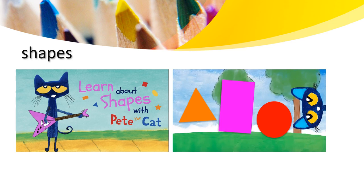Do you see a triangle? Do you see a circle? I want you to look around you and find a circle. Yes, it might be a clock — that is a circle. There is also a rectangle. Do you see a rectangle around you? Yes, your bed might be a rectangle. There is a triangle. What things do you see around you that are a triangle?